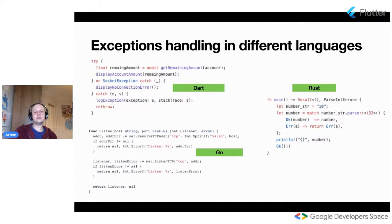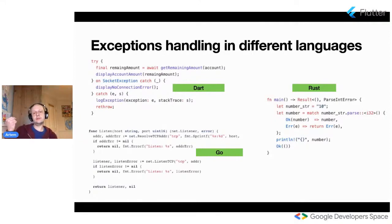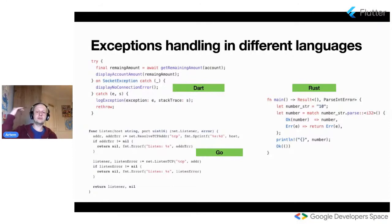Go encourages you to think about errors on the same level of importance as your happy path. And lastly, there's Rust — a third way of handling exceptions. In Rust, if a function can return errors, then it should. It's almost like Go, but it returns something like an Either type — a value or an error. Rust provides a rather fancy way of doing pattern matching: if it's a value you handle it, if it's an error you can do another pattern matching for error handling. Here, error handling has the same importance as your main happy path.